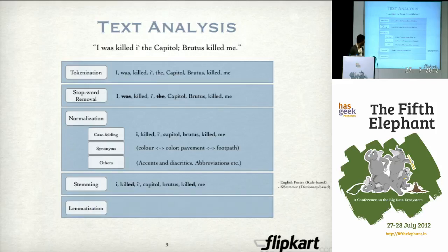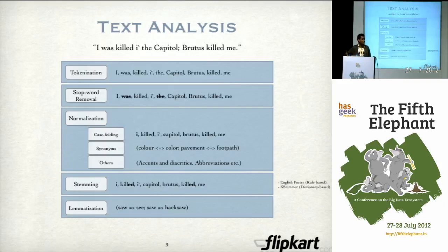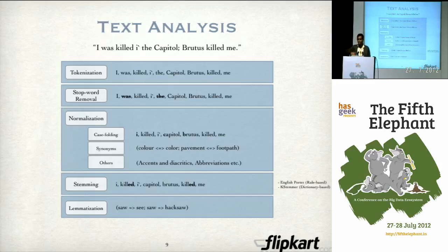There is a more advanced technique known as lemmatization, which not all search engines do. This is where the context around a word is used to determine its meaning. For example, the word 'saw' — S-A-W — could be the past tense of 'see' or could refer to a hacksaw. Various techniques involving natural language processing are used, such as part-of-speech tagging, where you tag each word in a sentence with the part of speech it belongs to. One important thing: all of these steps except tokenization are done to make fuzzy matching possible.